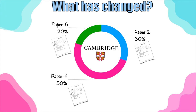There were no changes in the exam structure. You still have the three exam papers — paper two, paper four, and paper six — and they are still allocated the same percentages: 30% for paper two, 50% for paper four, and the smallest percentage is for paper six. Even the time for each exam paper is still the same: 45 minutes for paper two, 75 minutes for paper four, and one hour 60 minutes for paper six.